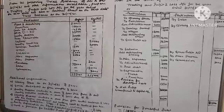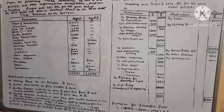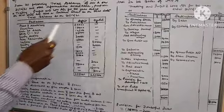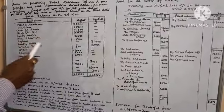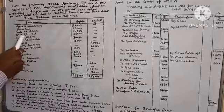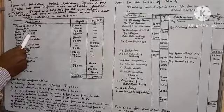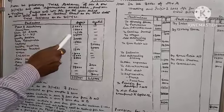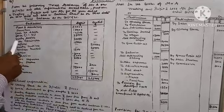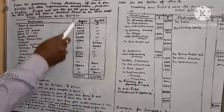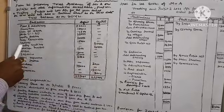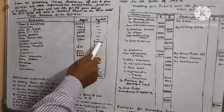Trial balance as on 31st December 2021: Plant and machinery Rs. 50,000 debit balance. Furniture 10,000 debit balance. Cash at bank 14,500 debit balance. Stock 1-1-2021 35,000 debit balance. Sundry debtors 30,000 debit balance. Bills receivable 15,000 debit balance. Capital 80,000 credit balance. Creditors 20,000 credit balance.